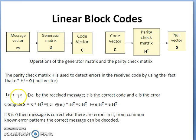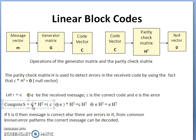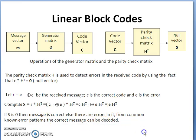Let r = c XOR e be the received message, where c is the correct code and e is the error vector. You can compute the syndrome s = r × H transpose, which expands to (c XOR e) × H transpose, and ultimately reduces to e × H transpose. This will be discussed in detail in the next part.